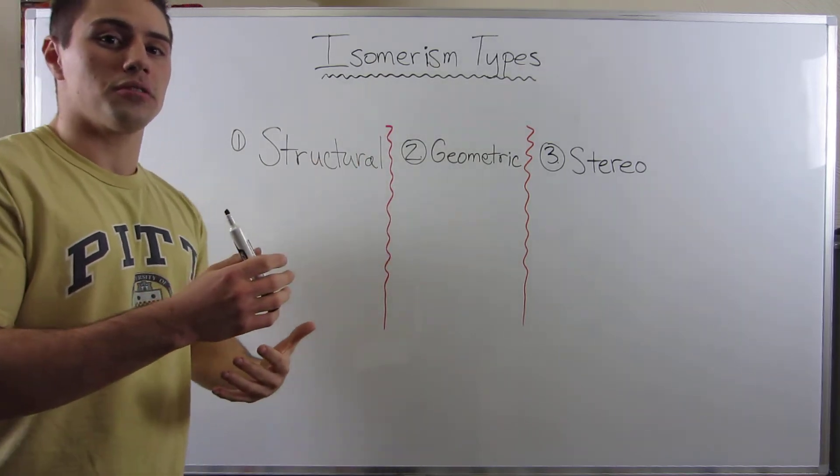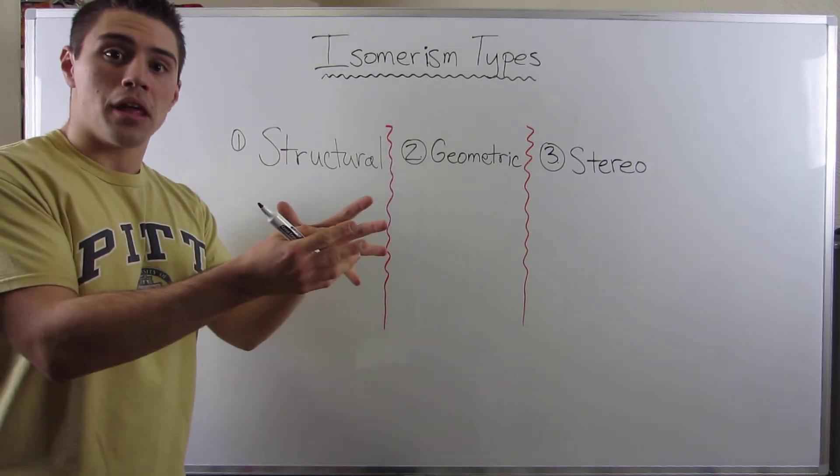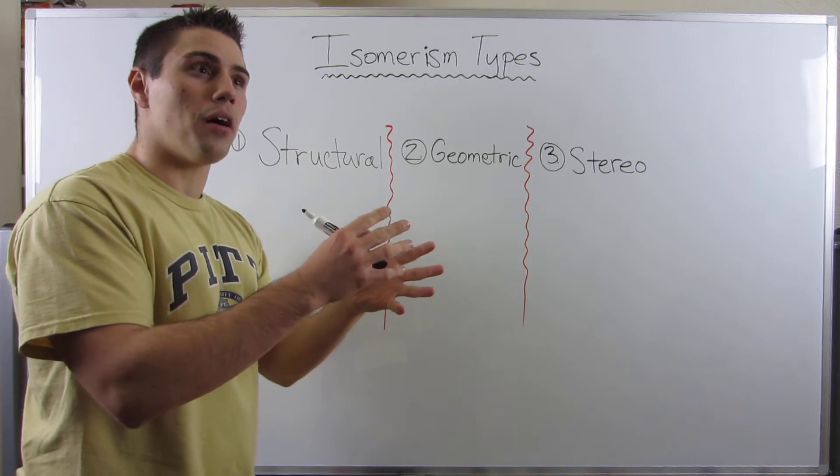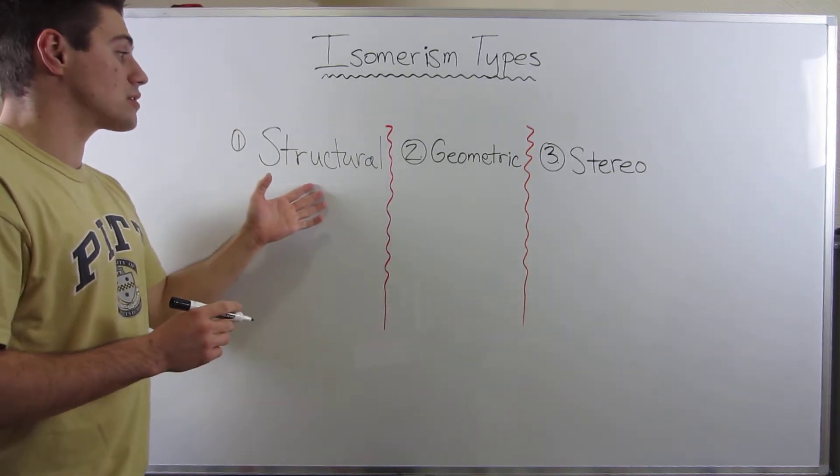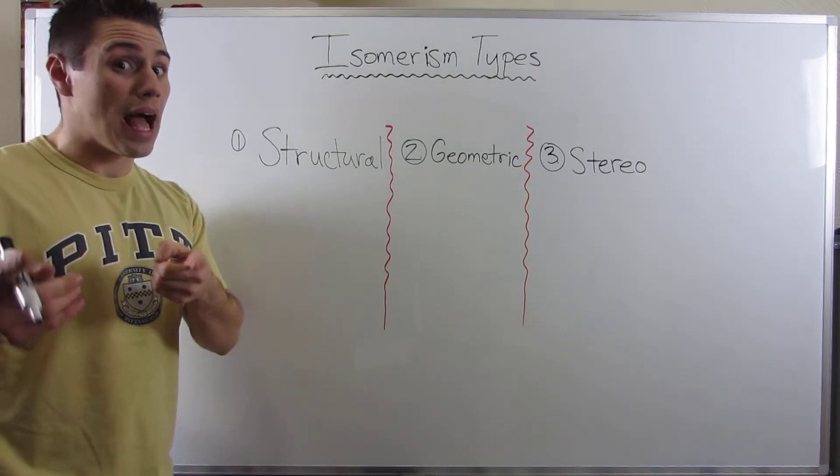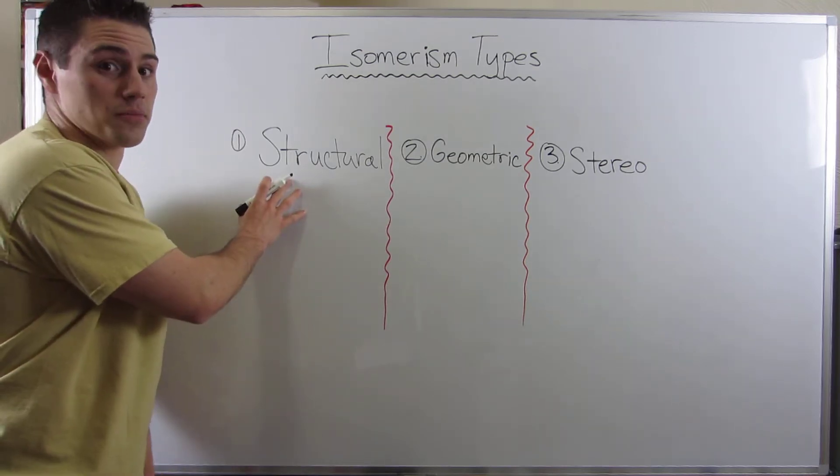Basically, isomerism is - there are different types. You have structure, and then you kind of have the same thing, but it's different, but still the same, and you'll see what I mean. Okay, so the first type of isomerism I want to talk to you about is relatively simple. You have seen it before, but we haven't addressed it. It's called structural isomerism.